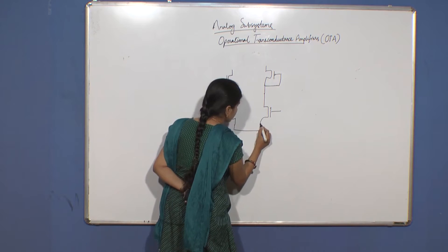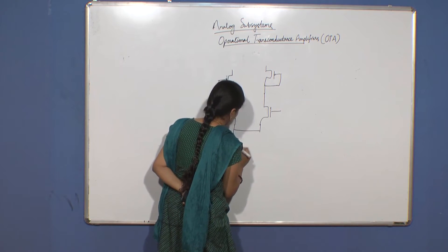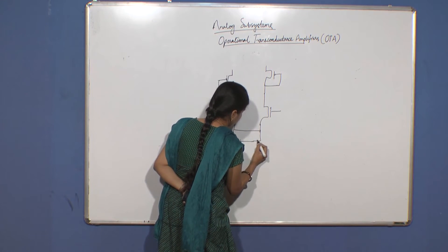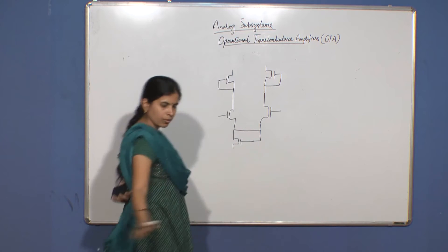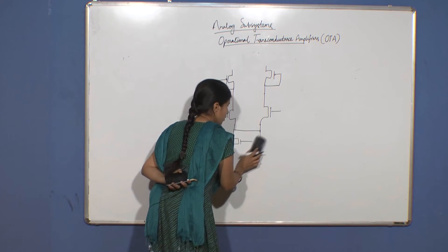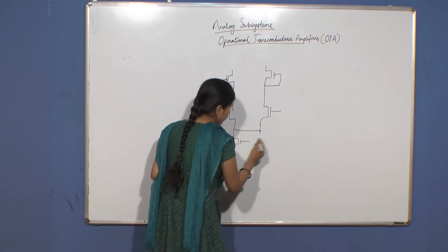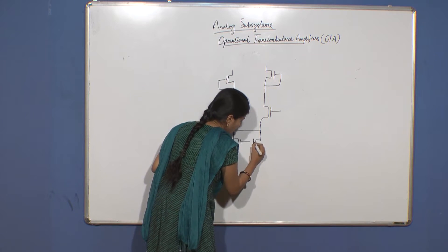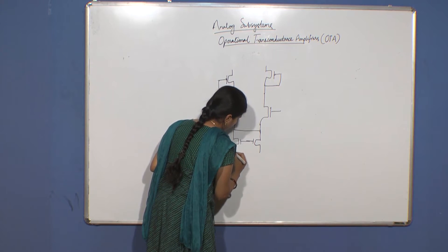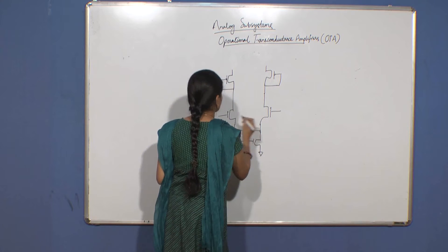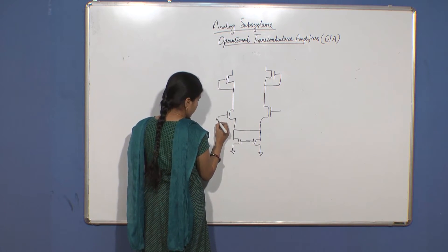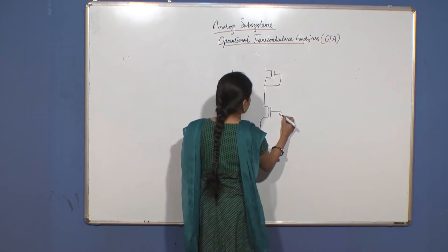You have your input transistors here, then you have this here. Let's say these are input nodes Vm and Vp.